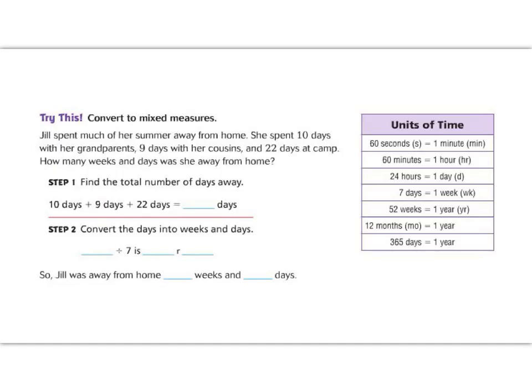One of the tricky things about time is that time often has to be used as a mixed measurement. We usually have time as days and weeks and years or minutes and hours and seconds. So let's look at some mixed measurements.